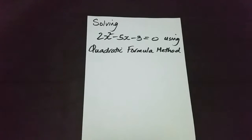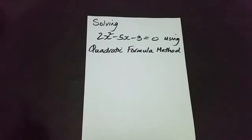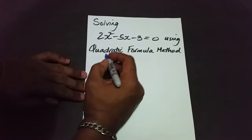All right guys, welcome back. Now we're going to attempt to solve the quadratic equation 2x squared minus 5x minus 3 equals 0 using the quadratic formula method. Remember, the quadratic formula — in this case x is the unknown, so the formula begins with x.